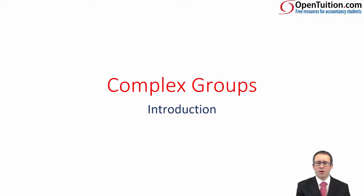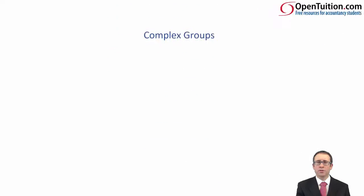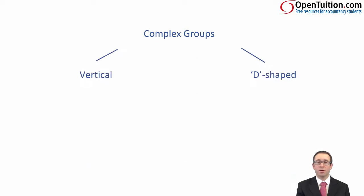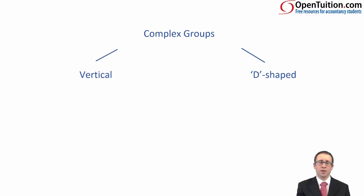So, what do we mean by complex groups? There are two types of complex group structures that we could be encountered with: a vertical complex group structure and a D-shaped complex group structure. Let's go through and look at them in isolation and what we have with regards to the group structure.